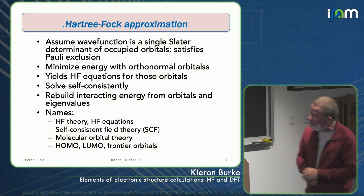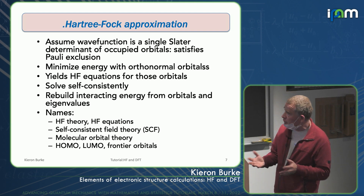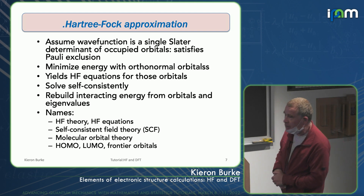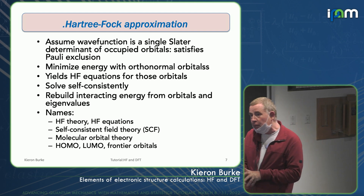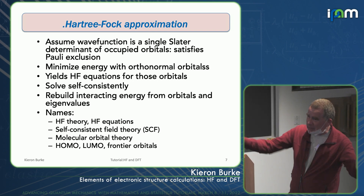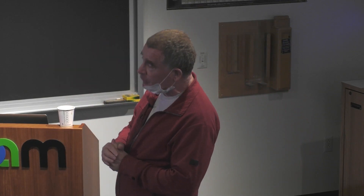You rebuild the interacting energy from the orbitals and the eigenvalues. This is called Hartree-Fock theory, Hartree-Fock equations, self-consistent field theory, molecular orbital theory. From about 1960 to about 1990, there were lots of books on molecular orbital theory. All of chemistry is understood in terms of molecular orbital theory — the shape of the molecular orbitals that come out of the Hartree-Fock equations, or at least it was at that time.